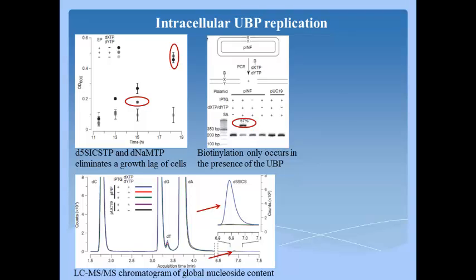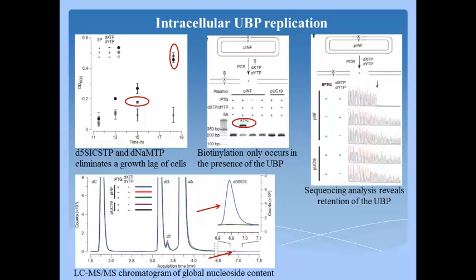No shift was observed in control experiments. When the amplification product obtained with unnatural base pair was analyzed by Sanger sequencing in the presence of unnatural triphosphates, the sequencing chromatogram showed a complete termination at the position of unnatural base pair incorporation. In contrast, amplification products from controls propagated under identical conditions showed no termination. These experiments confirmed the incorporation of unnatural base pair in the plasmid during replication.